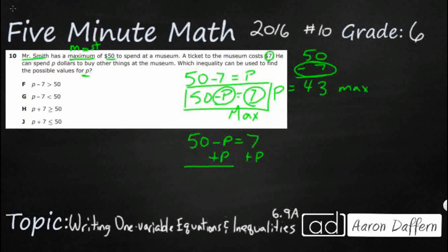50 minus P plus P. That gets rid of that. So now we've got a 7 plus P. So 50, 7 plus P. So now we're starting to look a little bit closer. Take a look. We can cross out F and G.